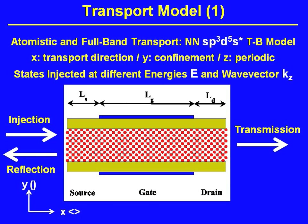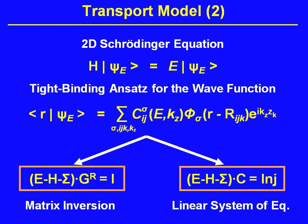The structure we want to look at is basically a one-dimensional structure. We want to look at transport in one direction, with injection from one end, and we can compute reflection and transmission. In this study we do not include scattering. We do this in a wave function approach where we inject waves from the left and catch them on the right, solving linear systems of equations rather than doing partial matrix inversions for a full NEGF calculation.